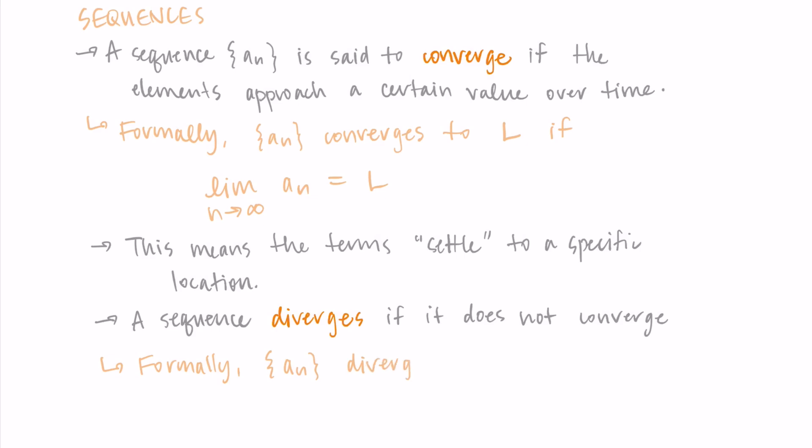Formally, we would say that the sequence a sub n diverges if the limit as n approaches infinity of a sub n does not exist. So if we try to take the limit looking further down the list of items in the sequence and there is no limit, then we say the sequence diverges.